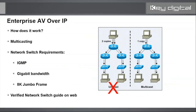So how does AV over IP work? It uses multicasting technology. A video source feeds an encoder, and that encoder broadcasts its data throughout the entire network switch — it could essentially flood the network. To prevent that, the network switch requires IGMP — Internet Group Management Protocol. Think of IGMP as the traffic police, ensuring that only the intended displays receive the stream broadcast from the encoder.